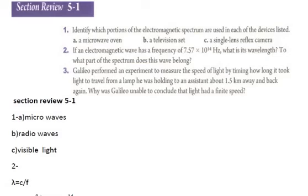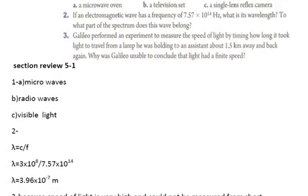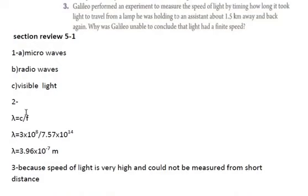The second question says: if we have an electromagnetic wave with a frequency of 7.57 times 10 to the power 14 hertz, what is the wavelength and to what part of the spectrum does this wavelength belong? You can use this rule to find lambda: lambda equals c over f, where c is the speed of light and f is the frequency. The speed of light is constant, 3 times 10 to the power 8, divided by 7.57 times 10 to the power 14. You get the result 3.96 times 10 to the power minus 7 meters.